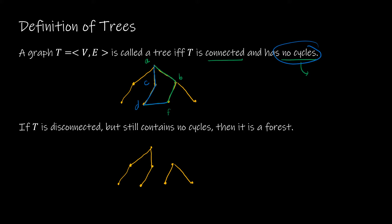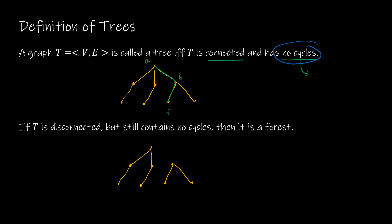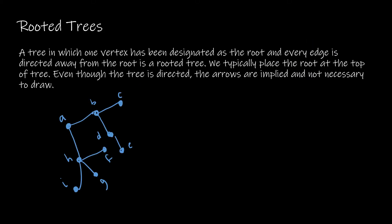Now if we happen to have more than one tree — just like in the real world — then we call this a forest. You can see this is the same graph as above; all I've done is taken away the segment that connects the two portions, and therefore this is called a forest because I have more than one tree.